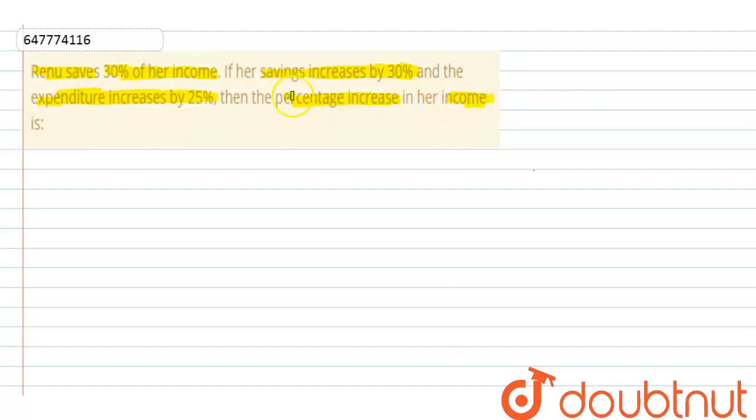So, we need to find the percentage increase in the income. As we all know, income is equal to savings plus expenditure. We will use this concept.